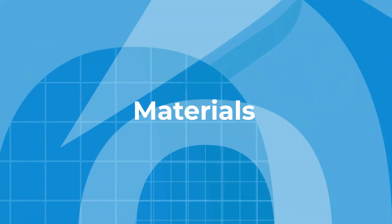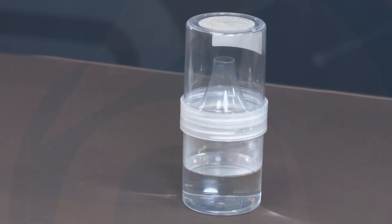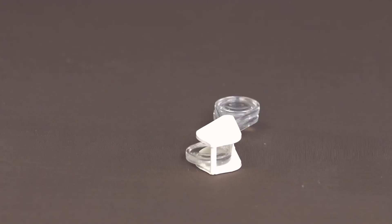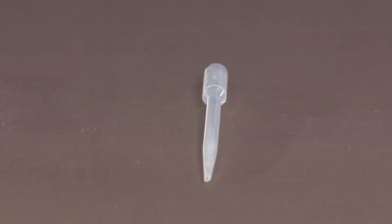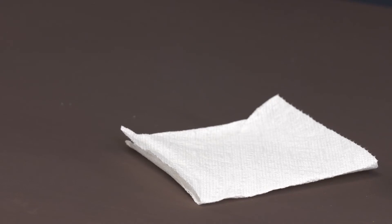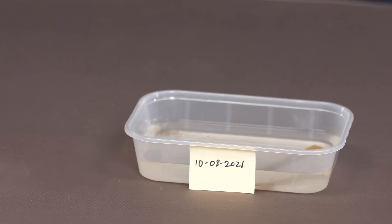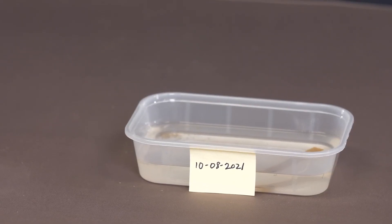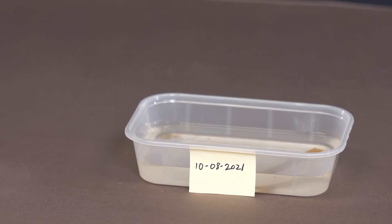Materials: breeder, fish food, magnifying glass, dropper, napkin, and half of the larvae used in the previous lab number two.